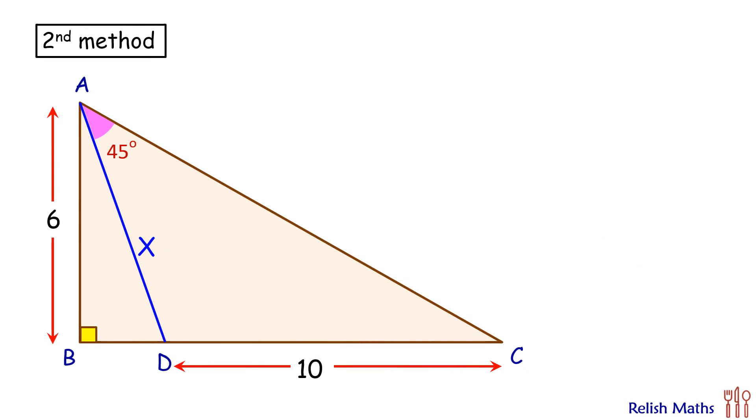In second method we'll find value of x by trigonometry. Let's assume this angle here is theta and the length BD is a centimeter. Now in the triangle ABD the value of tan theta will be perpendicular upon base, that is a upon 6. And in this full triangle ABC, the bigger triangle, the value of tan theta plus 45 degrees...